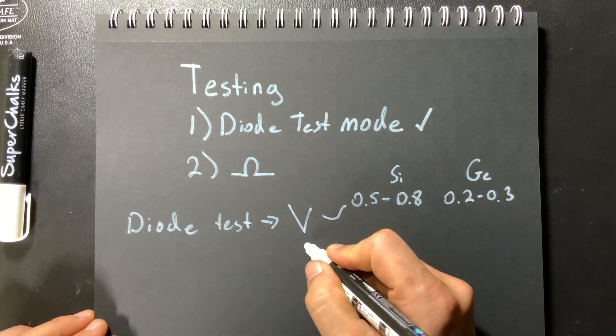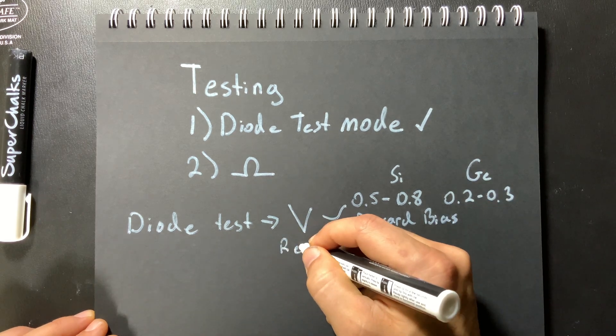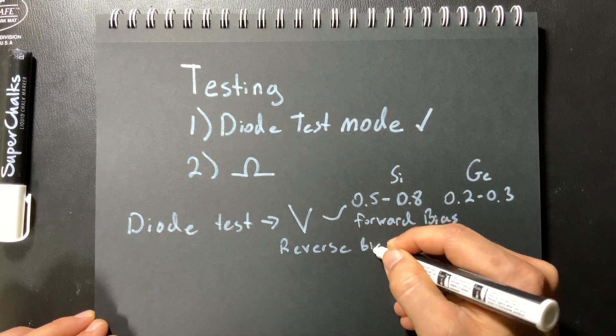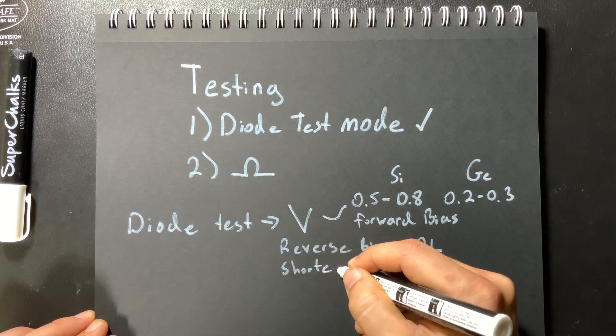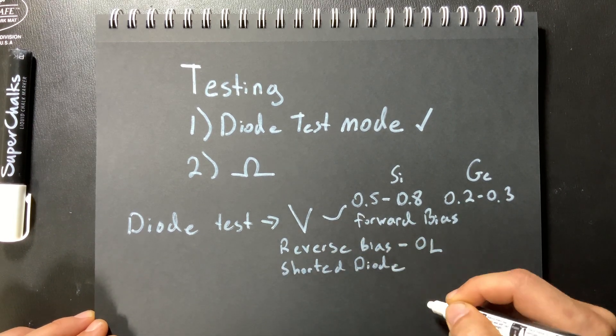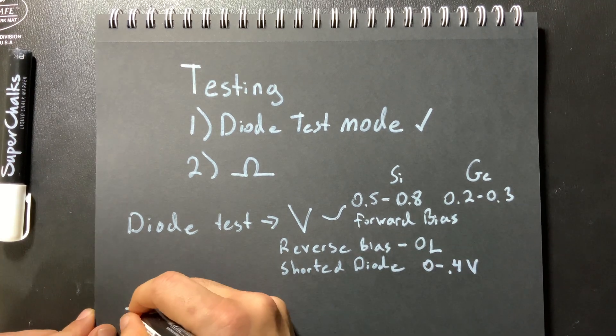Of course that's only going to be in forward bias mode. In reverse bias mode you're going to measure open line in both cases. And then if you have a shorted diode you might measure a low voltage or if it's an LED you're probably going to measure open line.